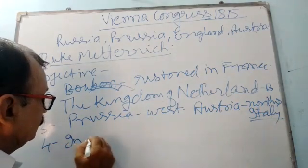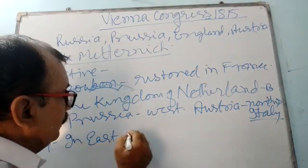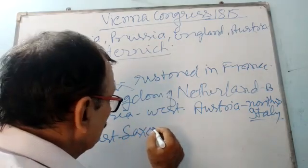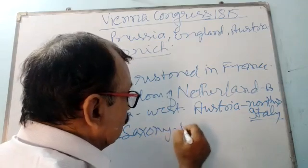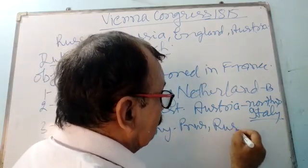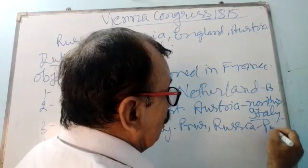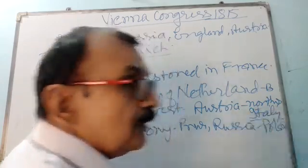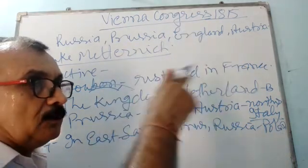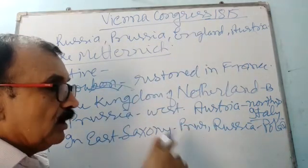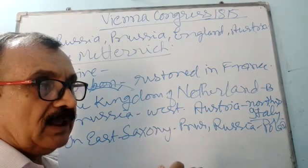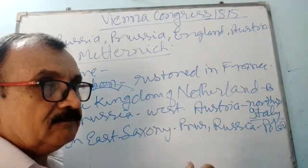In the East, Saxony was given to Prussia while Russia got Poland. In that way, a strong ring of countries was created around France so that France could not make aggression in future.